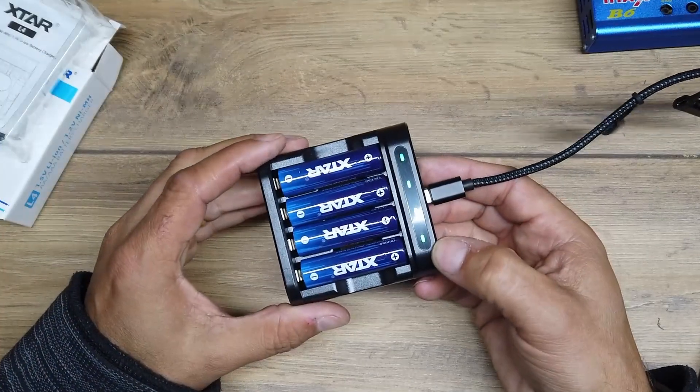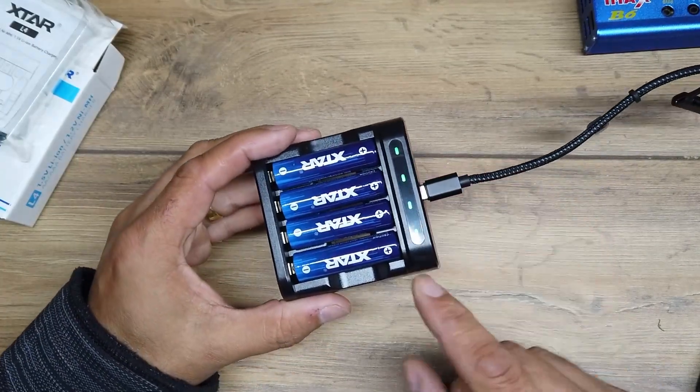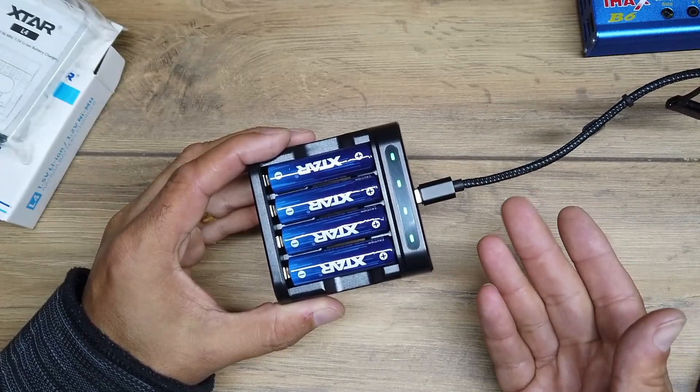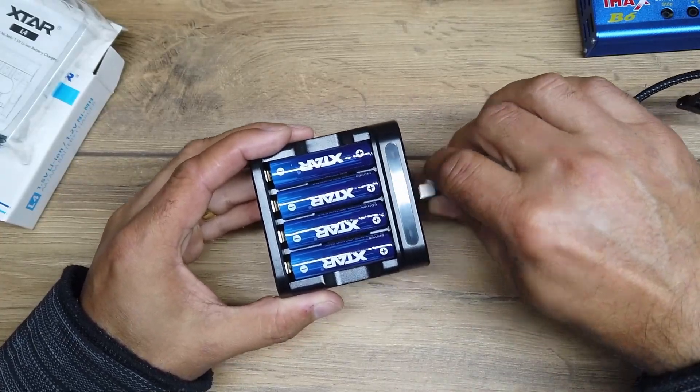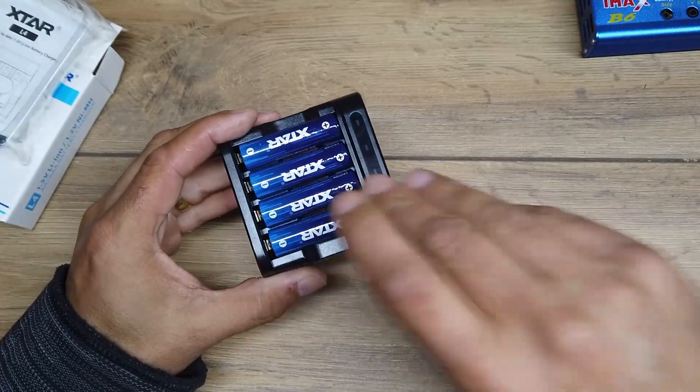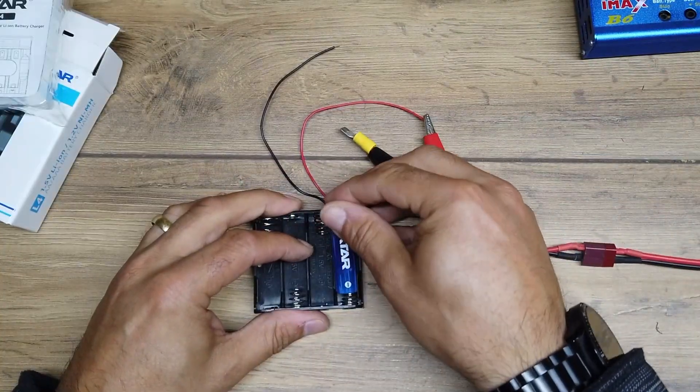All of the X-Star batteries now have green LEDs on them, so this is showing us that everything is nicely fully charged. Let's take out one of these X-Star batteries and fit it into a battery holder.